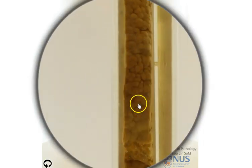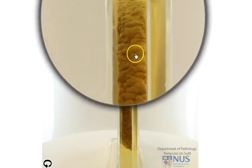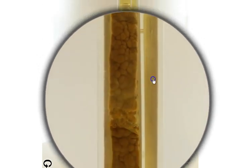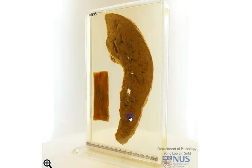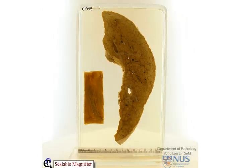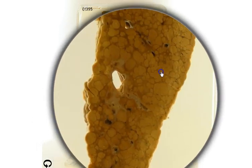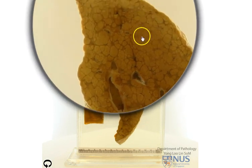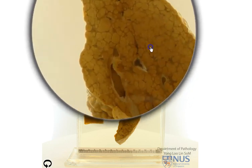Looking at the capsular surface, if we look up and down, we can see that the capsular surface appears somewhat irregular and nodular, and this is present throughout the entire slice. Coming back to the original surface and taking a tour of the cut section, we want to decide whether this is a discrete or a diffuse process. As you can see, this abnormality in architecture is present throughout the entire slice.